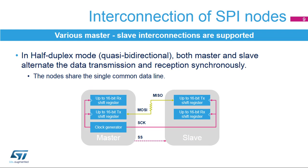Half duplex mode integrates the previous two modes by sharing a single line for data exchanges, and data flows in a single direction at a time. There is a cross connection between the master MOSI and the slave MISO pins in this mode. The master and slave have to alternate their transmitter and receiver roles synchronously when having a common data line. It's common to add a serial resistor on the half duplex data line between MISO and MOSI pins to prevent possible temporary short circuit connections, since master and slave nodes are not usually synchronized.